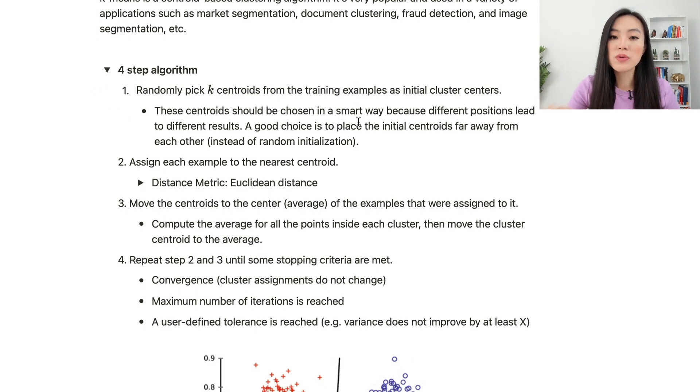These K centroids should be chosen in a smart way because different positions lead to different results. A good choice is to place the initial centroids far away from each other instead of random initialization.